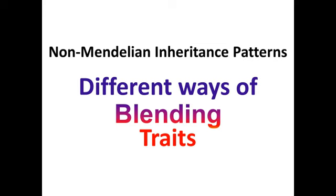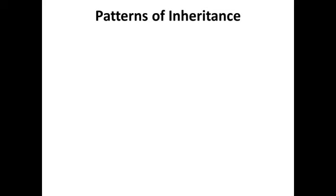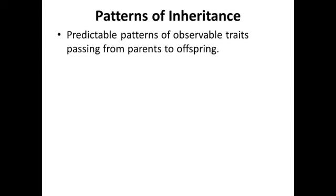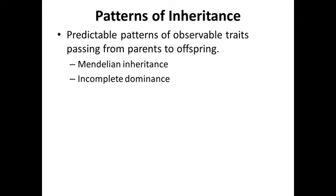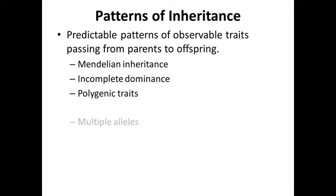So first, we're going to start off with a definition of what we mean by patterns of inheritance. Patterns of inheritance is just a fancy way of saying these are predictable patterns in which traits are passed from parents to offspring. Gregor Mendel described one pattern of inheritance — Mendelian inheritance — but it was by no means the only one. We'll also talk about incomplete dominance, polygenic traits, and multiple alleles today.